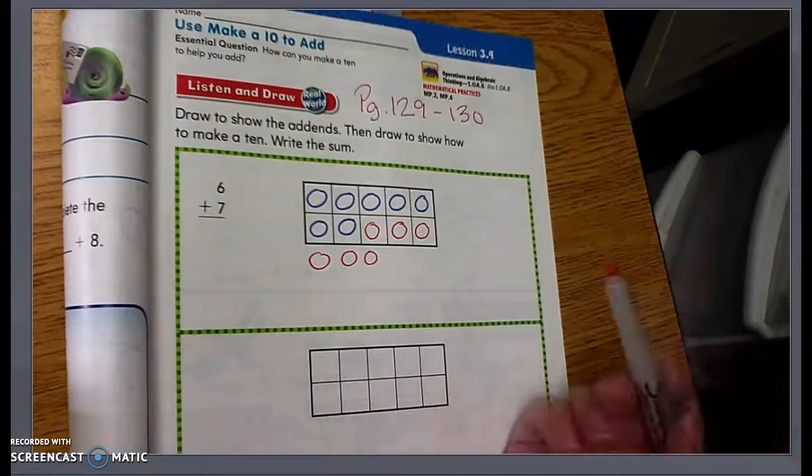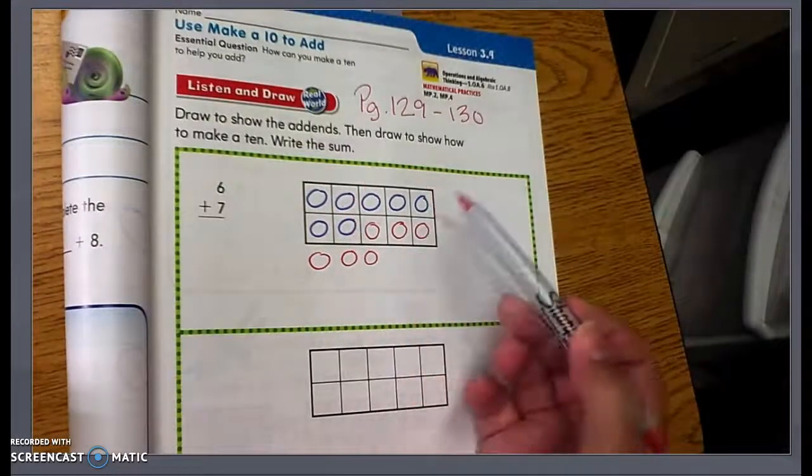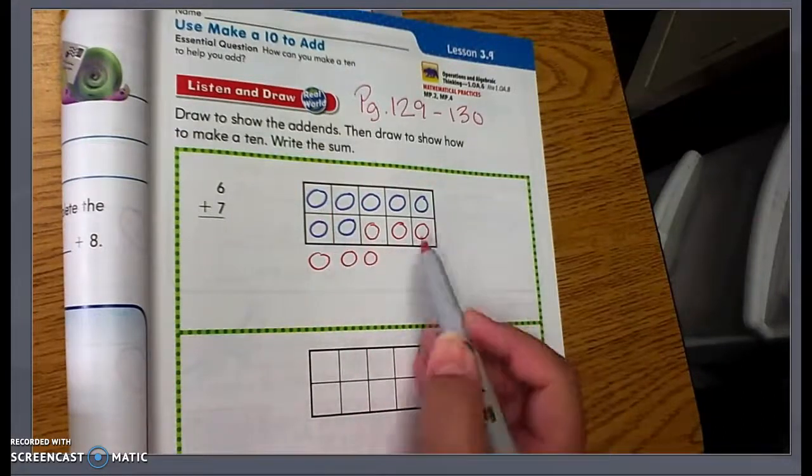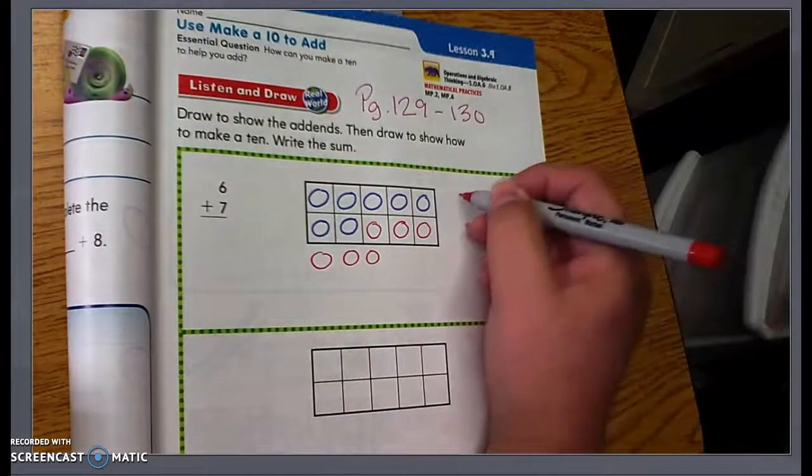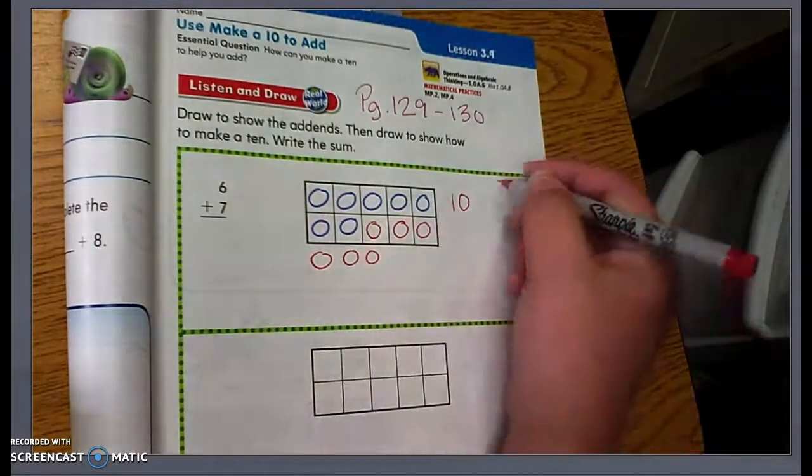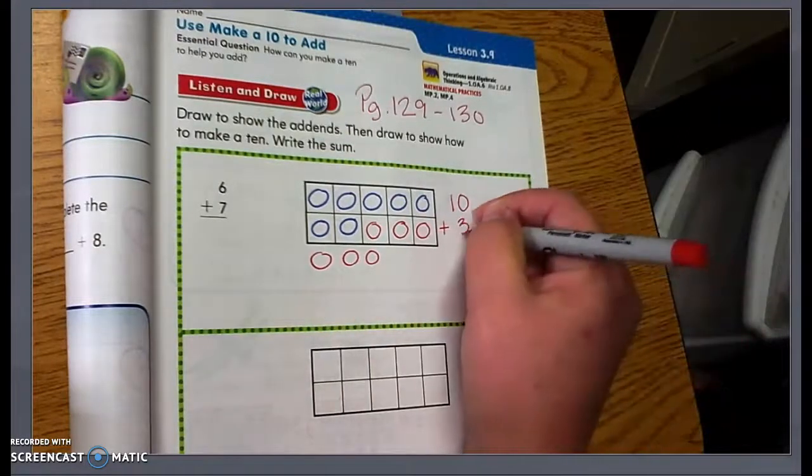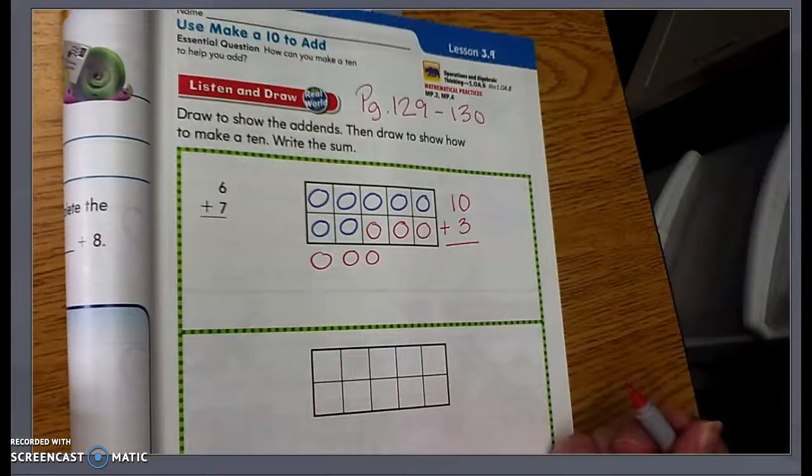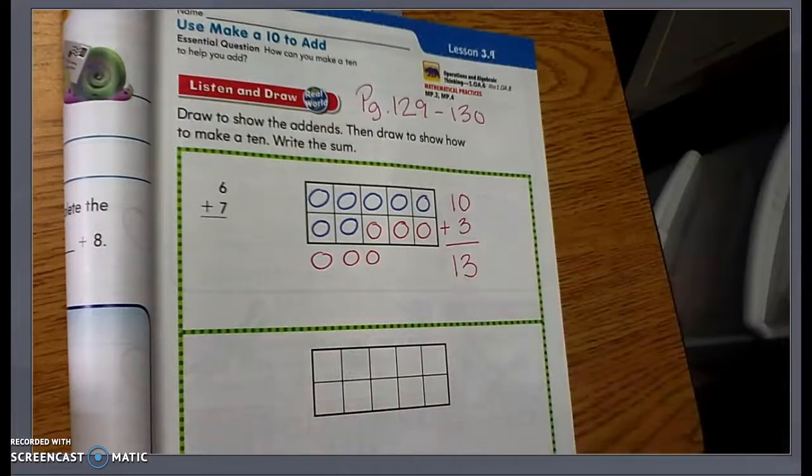So now I'm going to look here and see what is the total amount that I have. We know that this is already a 10 frame because we've filled in the 10 frame. So we can rewrite this math sentence as 10 plus how many do we have left? Three. And 10 plus three equals 13.